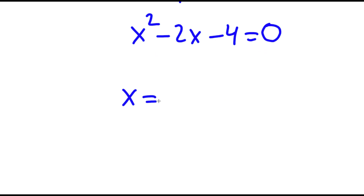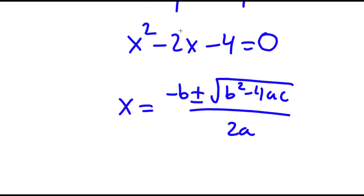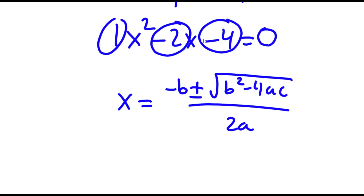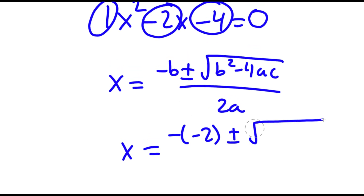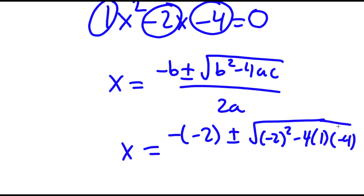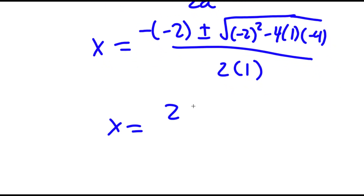To solve this I'm going to use the quadratic formula, which is negative b plus or minus the square root of b squared minus 4ac all over 2a. In this case b is negative 2, a is 1, and c is negative 4. So I have x equals negative negative 2 plus or minus the square root of negative 2 squared minus 4 times 1 times negative 4, all over 2 times 1.